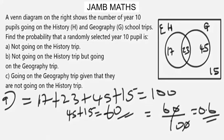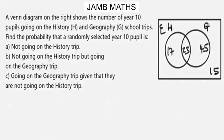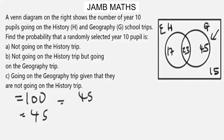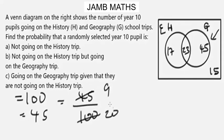For part (b), it says not going on the history trip but going on the geography trip. Since we have the total number of Year 10 pupils to be 100, the number of Year 10 pupils going for geography trip only is 45. The value 23 represents the number of Year 10 pupils going for both history and geography trip — we don't want both, just geography only, which is 45. So the probability is 45 over 100, which simplifies to 0.45.